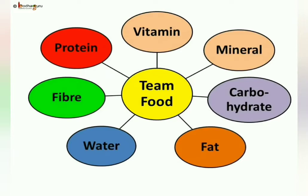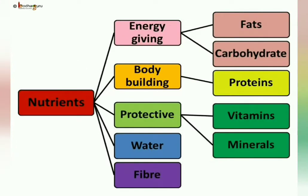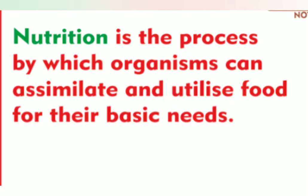These are the food components present in our food, known as the nutrients. Carbohydrates and fats are called energy-giving nutrients; proteins are body-building nutrients; vitamins and minerals are called protective nutrients. We get these nutrients from our food, therefore nutrition is the process of taking food which is rich in nutrients.